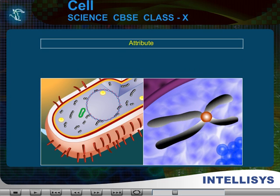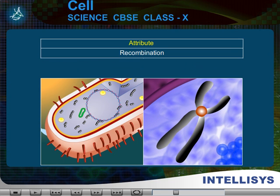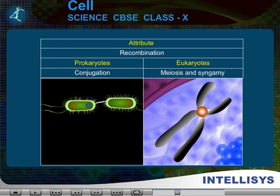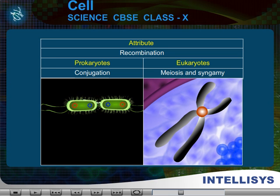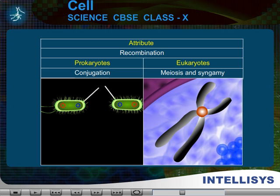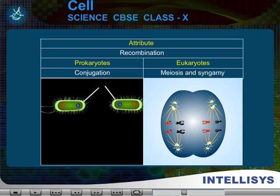Attribute: Recombination. In prokaryotes, it is conjugation. In eukaryotes, it is through meiosis and syngamy.